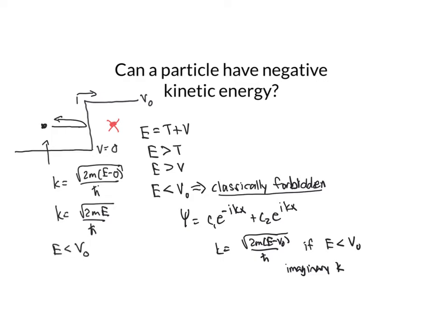So all this does is it makes my solution such that k is imaginary. So I could write k as i times square root of 2m(V₀ - E) over ℏ,